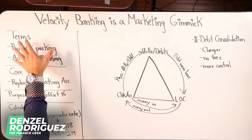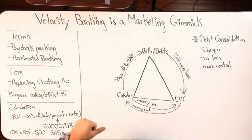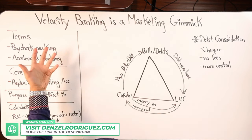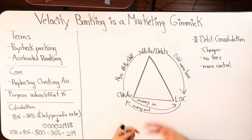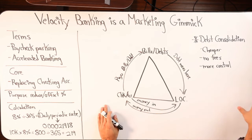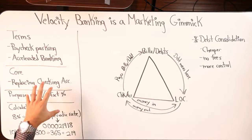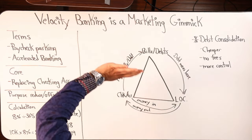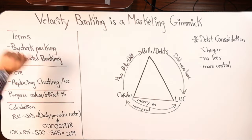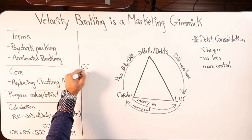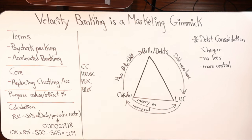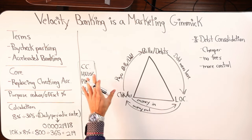You have velocity banking, and then other marketing terms called paycheck parking and accelerated banking. These are sexy terms to describe a fairly complicated, confusing type of strategy that allows us to leverage debt to pay off debt, or leverage debt to invest and make more income. At its core, what you are doing is replacing your checking account with a credit card, a HELOC, a PLOC, or a BLOC for business owners — one of these four tools.